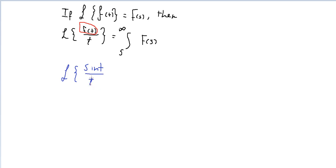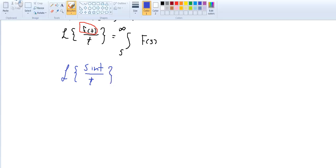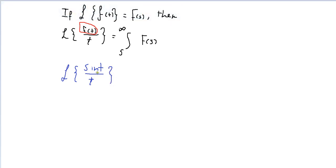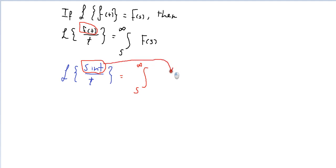The first question you ask yourself: do you know the Laplace Transform of sine(t)? Yes, we took it in previous lessons. So get the Laplace Transform of sine(t), then integrate from S to infinity. The Laplace of sine(ωt) equals ω over S² plus ω², and here omega is 1, so it is 1 over S² plus 1.